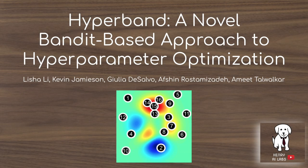This video will explain the Hyperband algorithm for AutoML. AutoML refers to the general practice of hyperparameter optimization in machine learning. This algorithm is going to show a way to speed up the evaluations of different hyperparameter configurations.